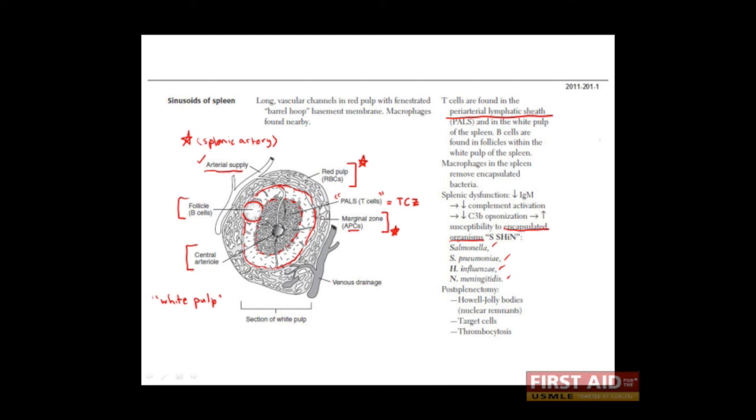In the absence of a spleen, for example, when it needs to be removed after trauma, or sometimes to improve the red blood cell count in patients with sickle cell anemia, individuals will need to receive a vaccine which specifically protects them against encapsulated organisms because they will lose the ability to efficiently recognize and clear these types of organisms.